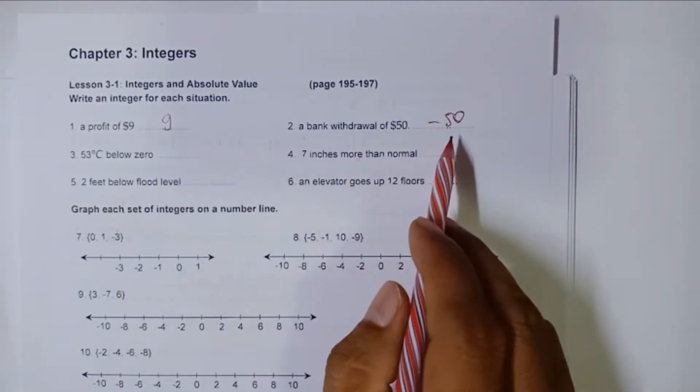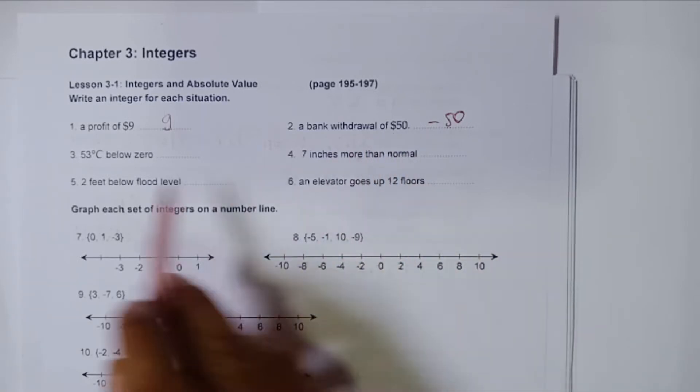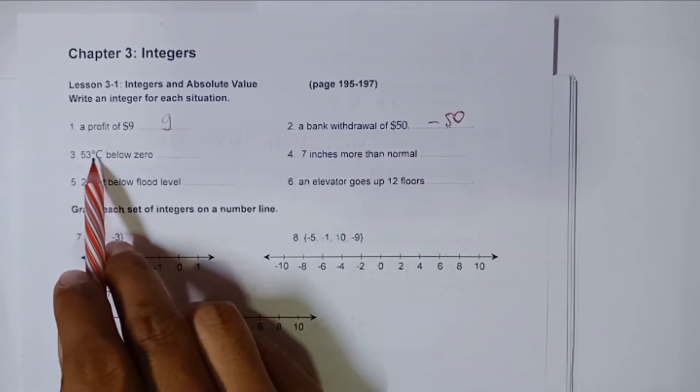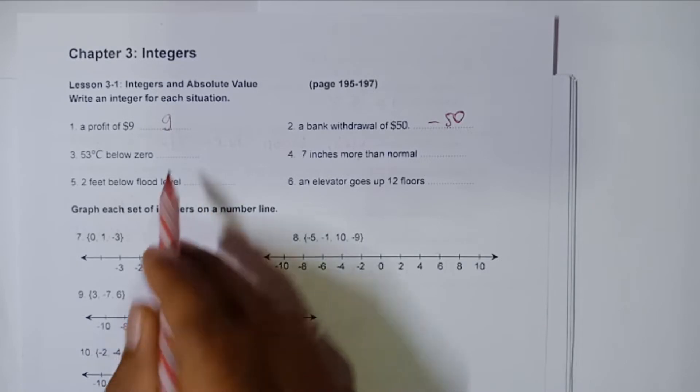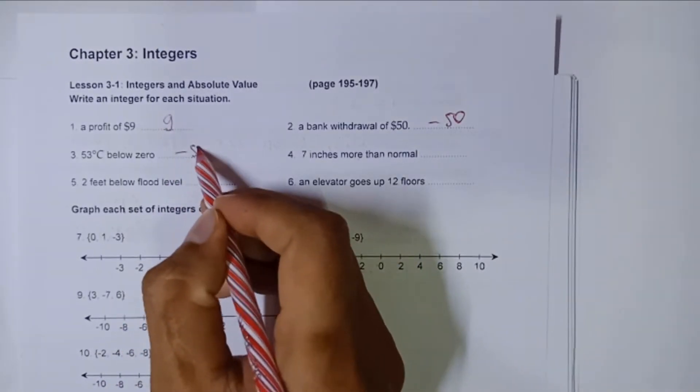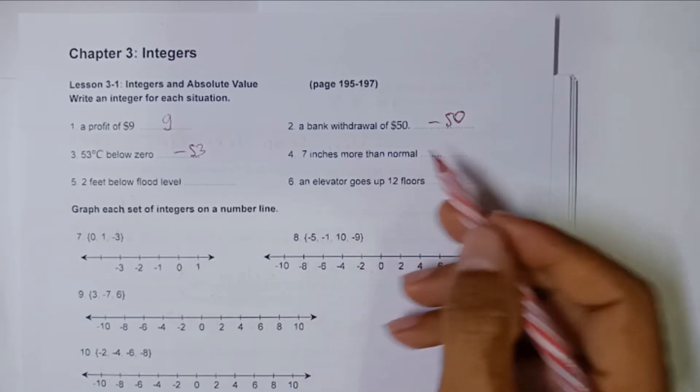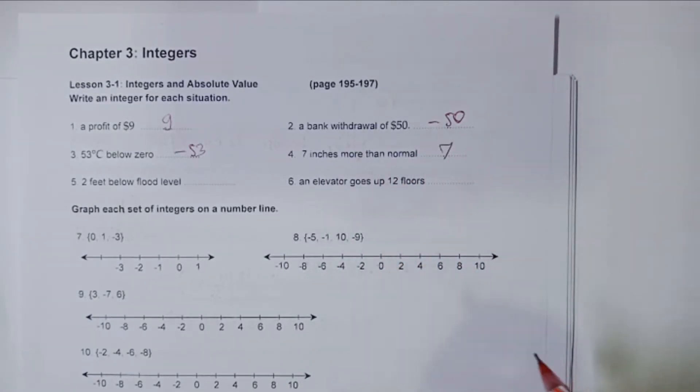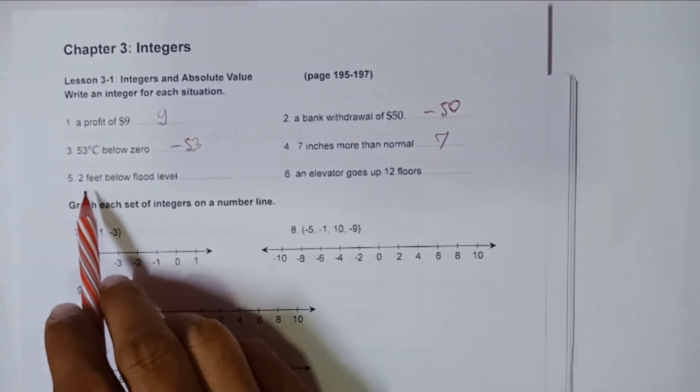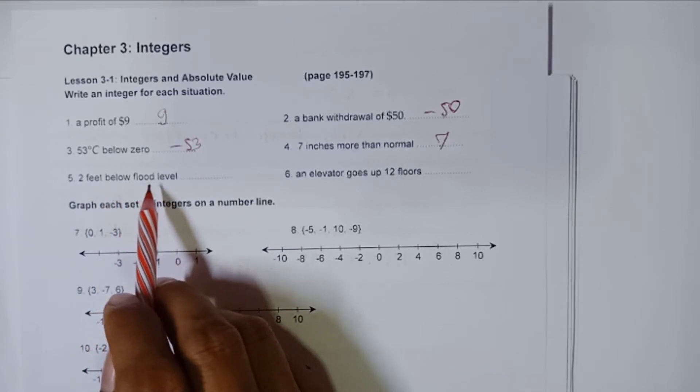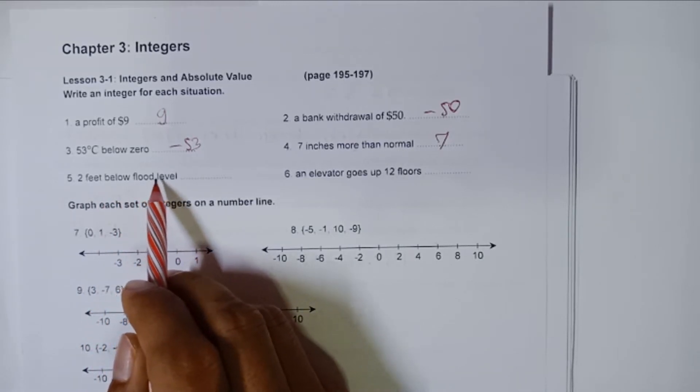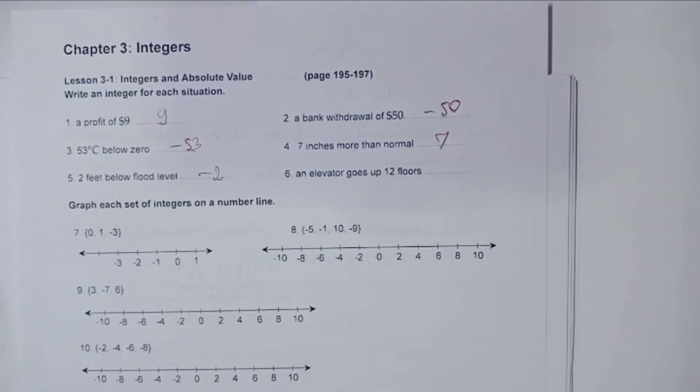This number is an integer that represents the situation: fifty-three degrees Celsius below zero. Below zero means it's going to be negative, so negative fifty-three. Seven inches more than normal, so plus seven or just seven. Two feet below flood level, so this is going to be negative two.